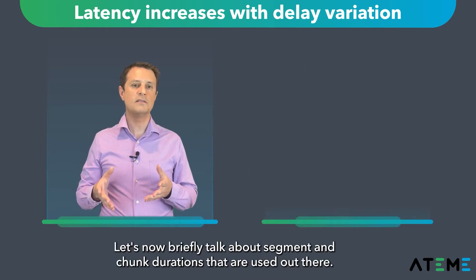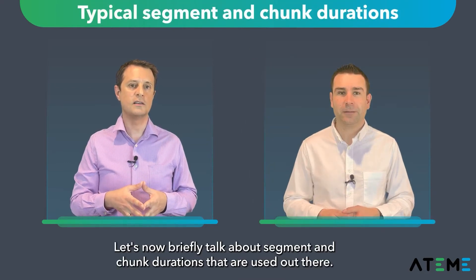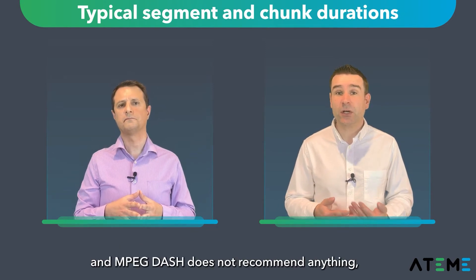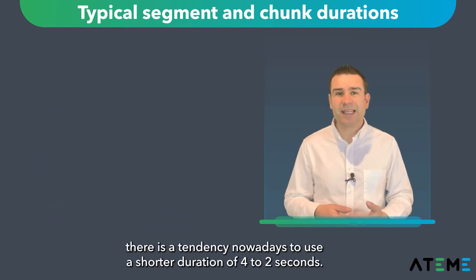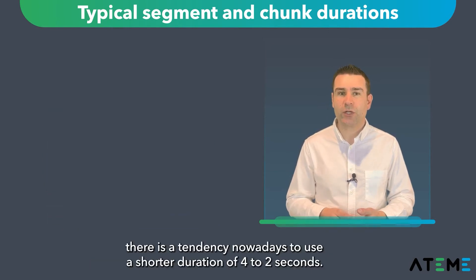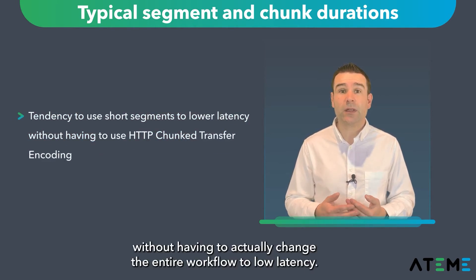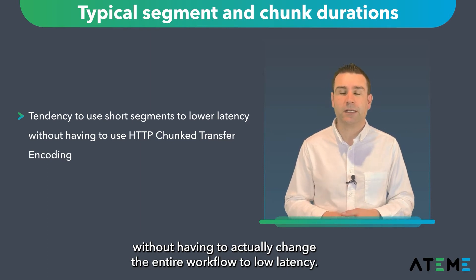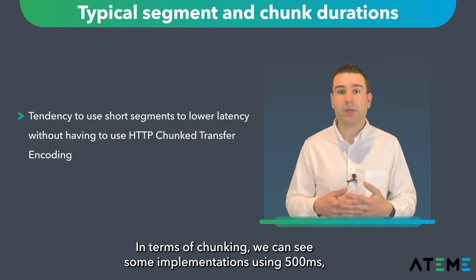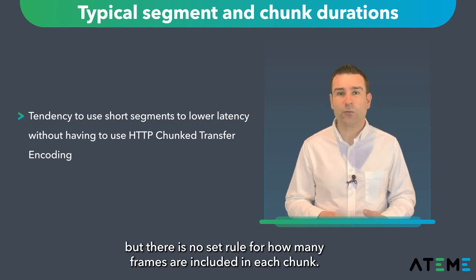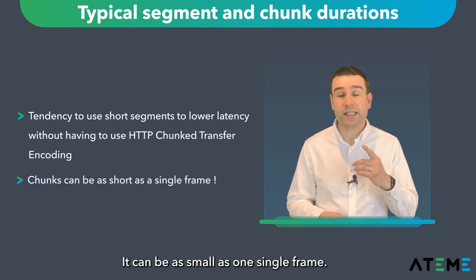Let's now briefly talk about segment and chunk durations used out there. While HLS recommends 6-second segments, and MPEG-DASH does not recommend anything, there is a tendency nowadays to use a shorter duration of 4 to 2 seconds. The goal is to lower latency without having to change the entire workflow. In terms of chunking, some implementations use 500 milliseconds, but there is no set rule for how many frames are included in each chunk — it can be as small as one single frame.